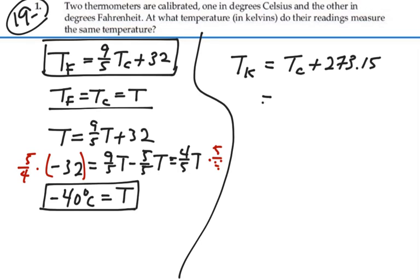So in this case, the Kelvin temperature would be negative 40 plus 273.15, so that would be 233.15 Kelvins.